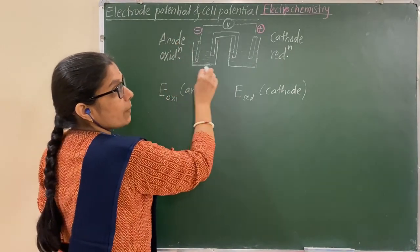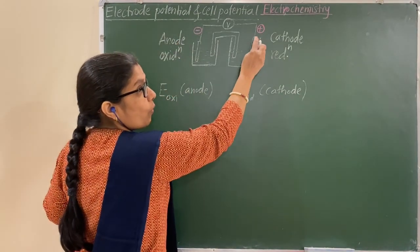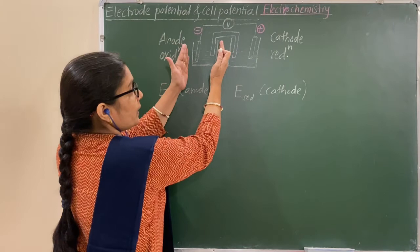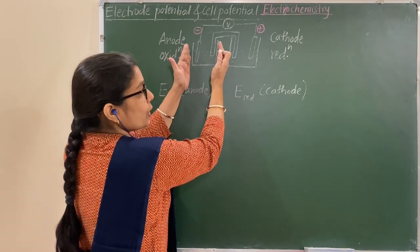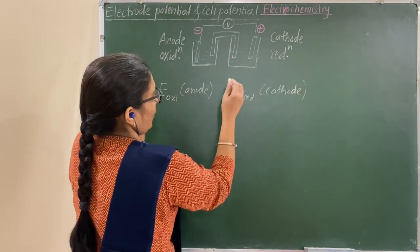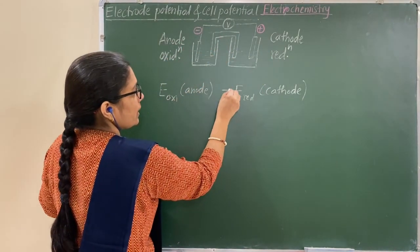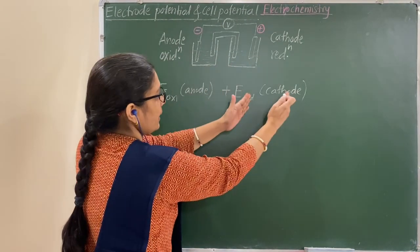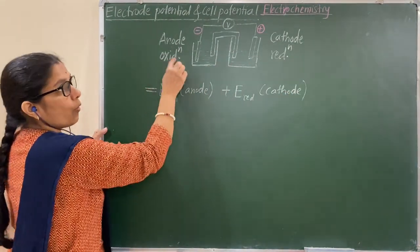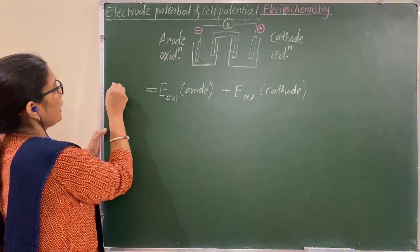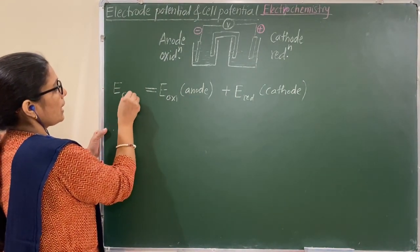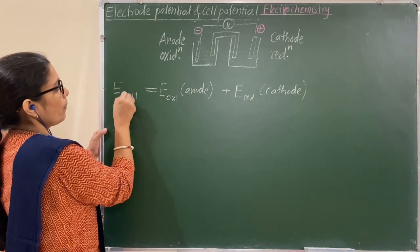The overall cell potential is the sum of the oxidation potential and the reduction potential. The sum of these two gives the overall cell potential, that is the cell potential.